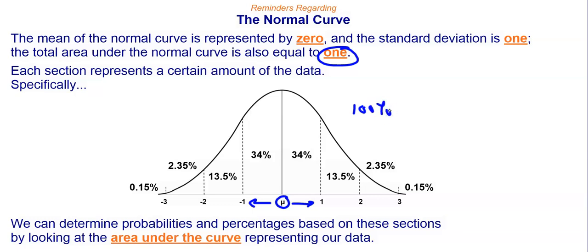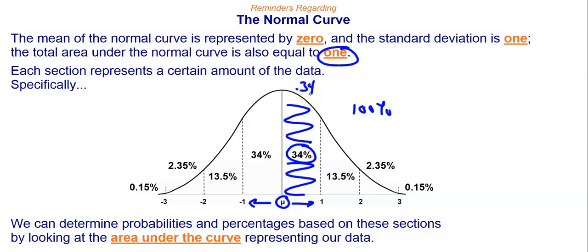Each section represents a certain amount of data. For example, between the mean and one standard deviation, that's represented by 34% of the data. Or the area of that section, changing it to a decimal, is 0.34. We can determine the probabilities and percentages based on these sections by looking at the area under the curve representing our data.